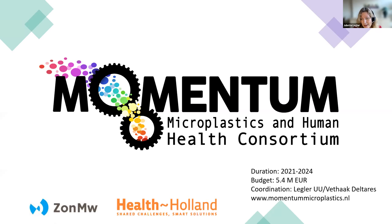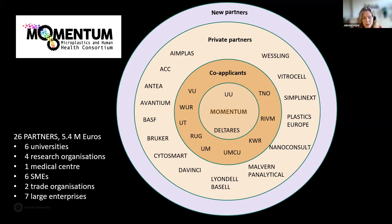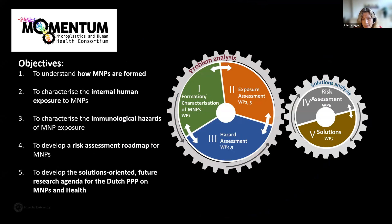One of the projects which I have the honor of coordinating is called the Momentum project. This is a Dutch initiative funded by our Dutch Science Foundation, in which we have brought together a large consortium for a three-year project to understand these human health impacts. It's a really diverse consortium of both universities and private sector organizations, including some of the largest plastic producers, working together to better understand these health impacts. Our objectives include better understanding how micro and nanoplastics are formed from food packaging, looking at different weathering processes, and generating micro and nanoplastics for testing that are more environmentally relevant.